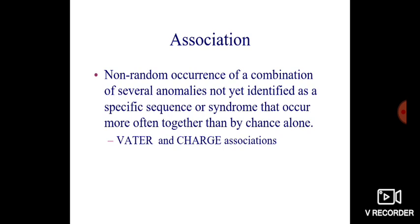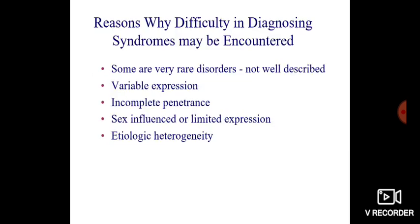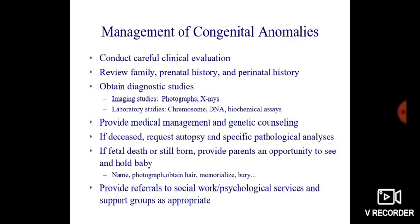Examples include the VATER association and the CHARGE association. There is difficulty in diagnosing syndromes because these are very rare disorders with variable expression, incomplete penetrance, and sex chromosomes may affect or influence their expression, and there may be etiologic heterogeneity as well.